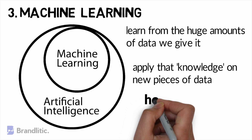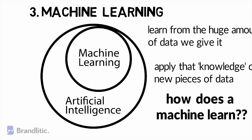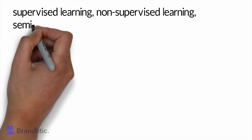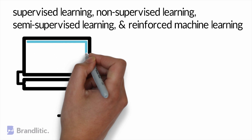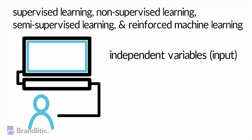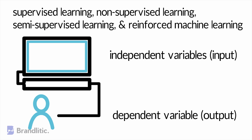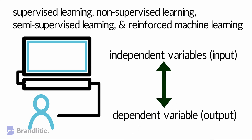But how does a machine learn? There are different ways of making a machine learn. These broadly include supervised learning, unsupervised learning, semi-supervised learning, and reinforced machine learning. In some of these methods, a user tells the machine what are the features or independent variables — the inputs — and which are the dependent variables or outputs. So a machine learns the relationship between independent and dependent variables present in the provided data. This data provided to the machine is called the training set.